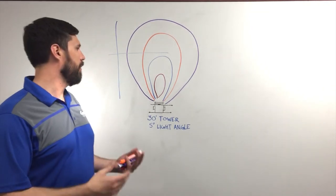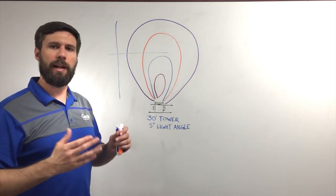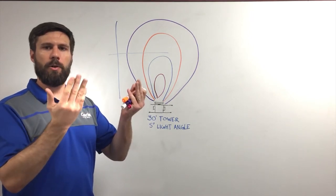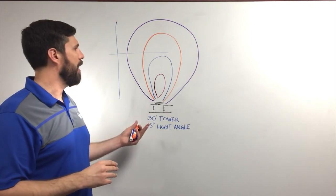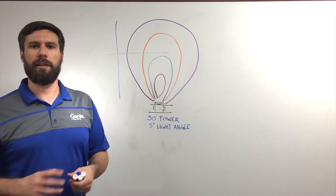Now you can change the coverage level or the coverage pattern of the light tower by adjusting the angle of the lights, the toe in or toe out of the lights, and the tower height. All of those are factors to consider when you're planning your next light tower job.